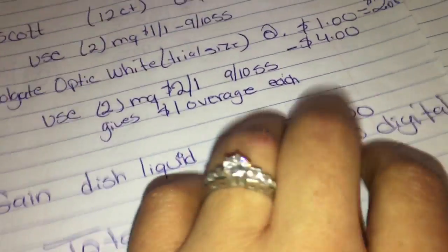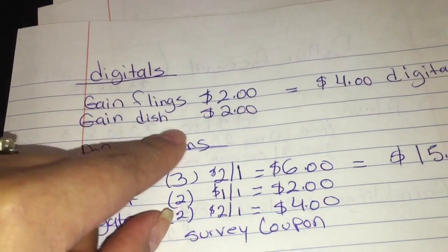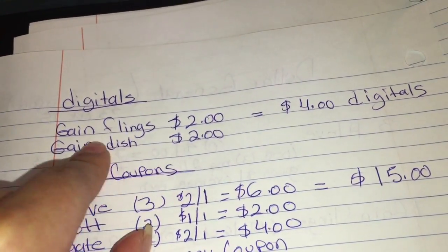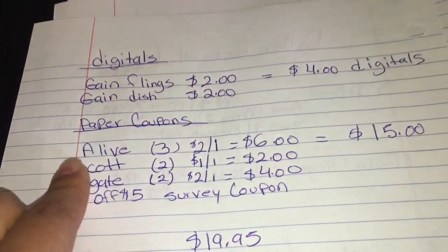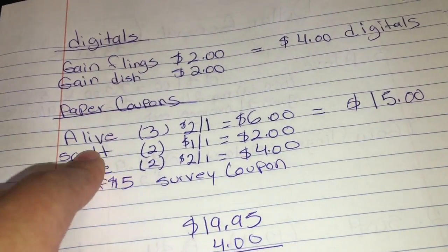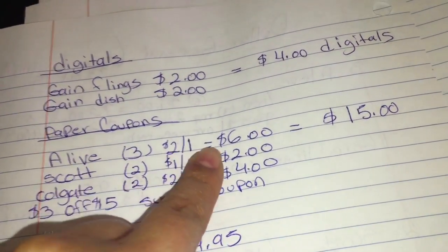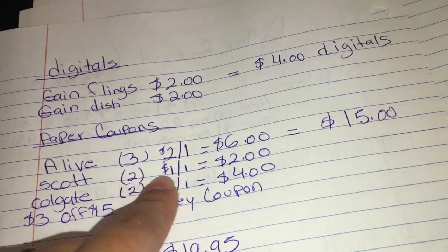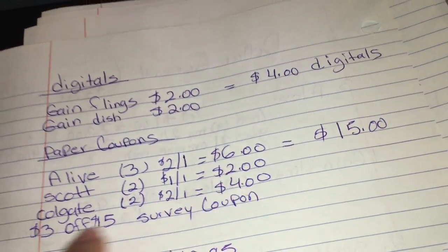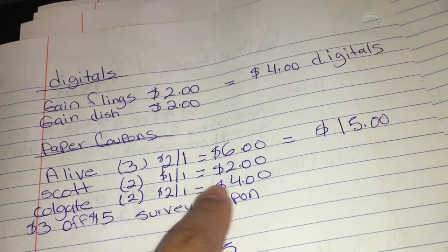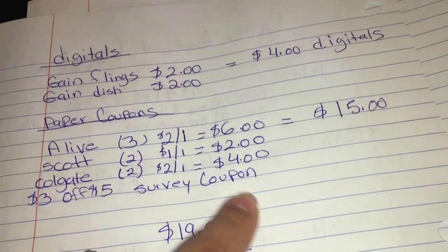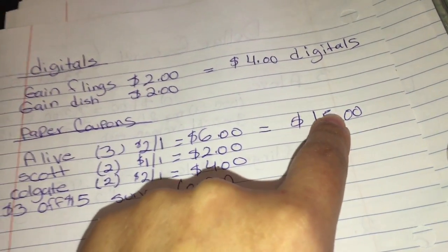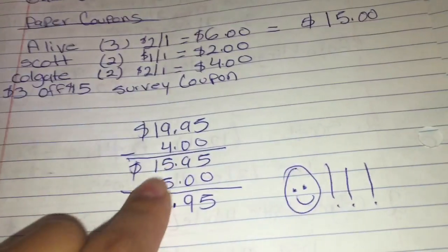The total for this is going to be nineteen dollars and ninety-five cents. Let me show you all the digitals I mentioned — we have only two of them: Gain Clings two dollars, and Gain dish two dollars, so total in digitals we have four dollars. On paper coupons: for the Leaf we have three for two-dollars-off-one, which equals six dollars; for the Scott we have two for one dollar off, which equals two dollars; for the Colgate we have two for two-dollars-off-one, which equals four dollars; and then the three-dollars-off-fifteen survey coupon. That equals fifteen dollars in paper coupons.